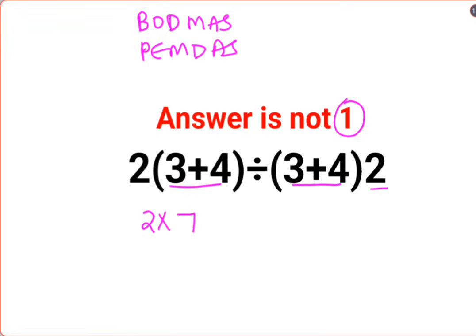Since there is no sign between this 2 and bracket, it means multiplication. Divided by again this bracket, that is 3 plus 4 which is 7, multiplied by 2.